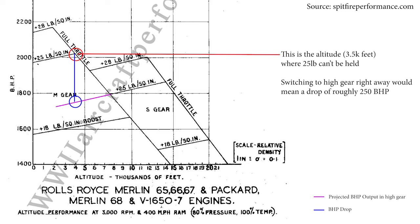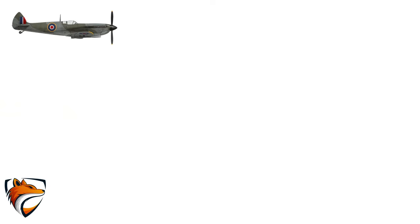Let's talk about the engine regimes of the Spitfire and some fuel economy tips. For flights from A to B or patrols, you want to use cruise power. Cruising power is an official engine regime as per the Spitfire manual — it sits at 2,650 RPM and 7 pounds of boost, and is indefinitely sustainable. Note that you leave cruising power when RPM or engine boost exceeds those settings. Cruising power gives you a good cruising speed at an efficient fuel consumption of roughly 5.6 liters or 1.2 imperial gallons per minute, giving you about 68 minutes in the air on a full tank.